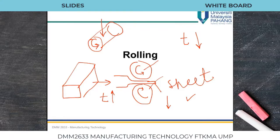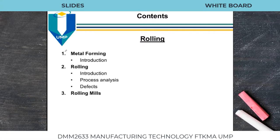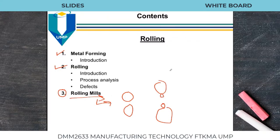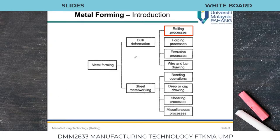In metal forming, we are going to shape metals and other materials. In metal forming we have the rolling process, and rolling process has different types of rolling mills. There are different arrangements: sometimes we have two rollers, sometimes four rollers. Depending on the configuration we have different types of rolling mills.